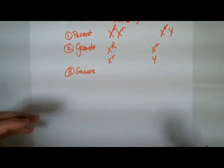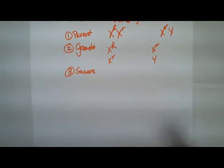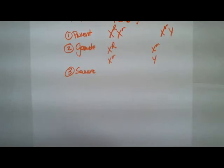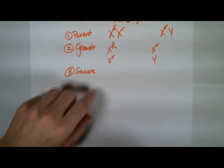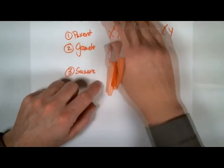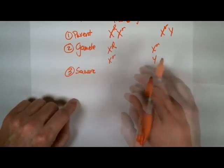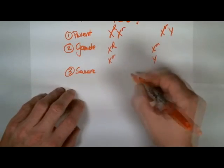that Punnett square, so that we can randomly associate the two alleles from each of the organisms together, so that we can see what kind of organisms we get, or what the possibilities are we get. Remember that on the organism that's on the left, I tend to make my rows, the one on the right, that's what I tend to make my columns.